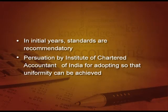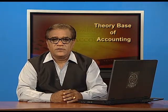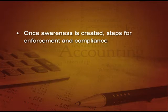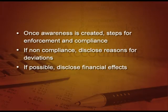After some time, persuasion by ICAI is there — please adopt so that uniformity can be achieved. So, first recommendatory, then persuasion, and then once awareness is created, steps for its enforcement and compliance are made. If there is non-compliance, the organization has to disclose the reason for deviations and, if possible, they have to disclose the financial effect of the deviations also.